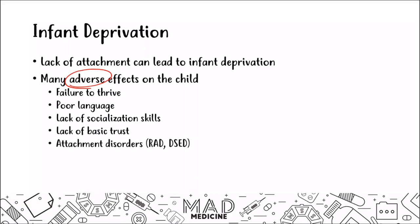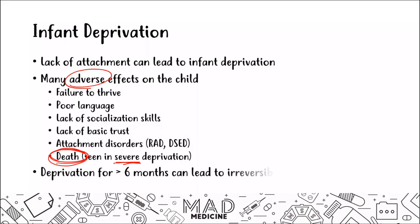These children can also develop attachment disorders, which we'll discuss in a moment. In severe deprivation, death can actually occur — studies have shown that infants deprived of attachment can die. Importantly, deprivation greater than six months can lead to irreversible changes. Before six months there is a possibility that problems like lack of trust and poor language or socialization skills can be reversed, but after six months those changes become permanent.